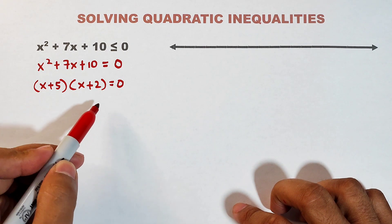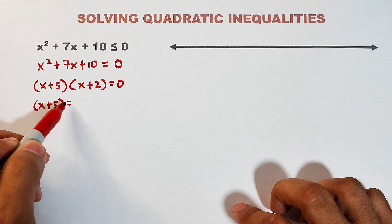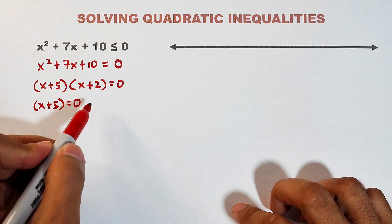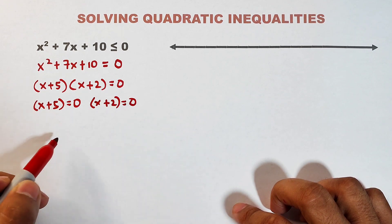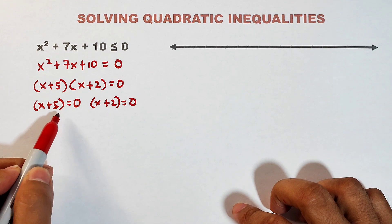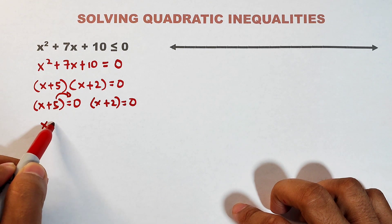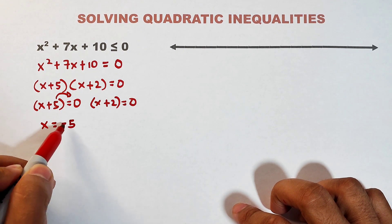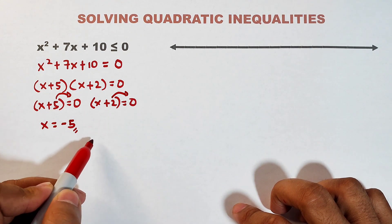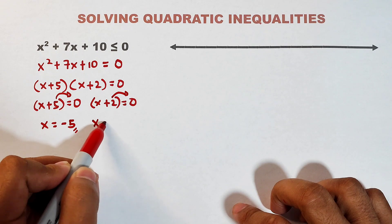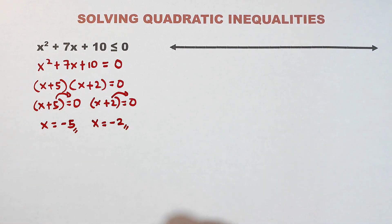Equate each factor by zero. x + 5 = 0 and x + 2 = 0. Transpose 5 to the other side: x = -5. Transpose 2 to the other side: x = -2.